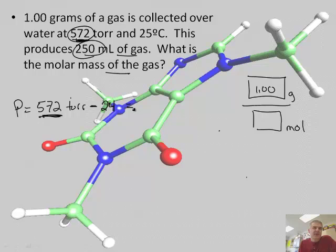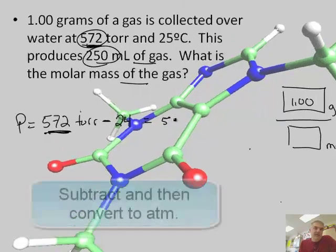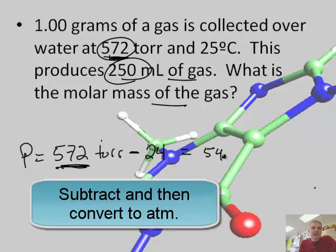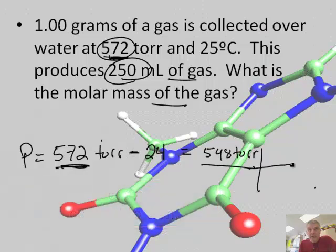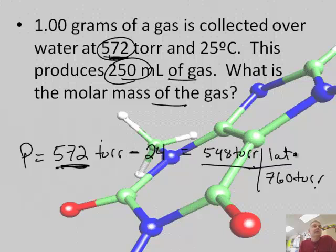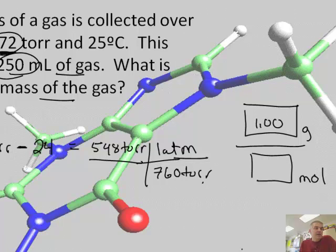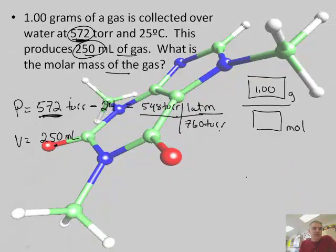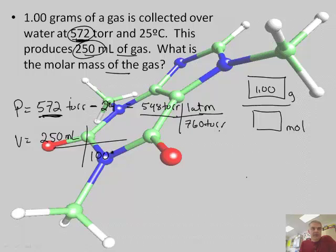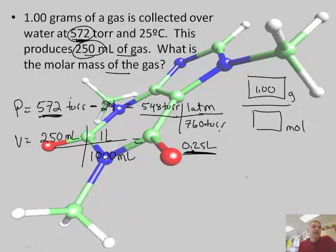So that number was 23.7. But since this is around to the nearest whole number, I'm going to say 24. So if I subtract 572 minus 24, I can just do that in my head. That would be 548 torr. Now, I have to convert that to ATMs, remember. So there's 760 torr in one ATM. I'll get my calculator at the end here. And then my volume is 250 milliliters. All right, and then, there's 1,000 milliliters in one liter. I don't need a calculator for that. That's 0.25 liter. So that's my volume.